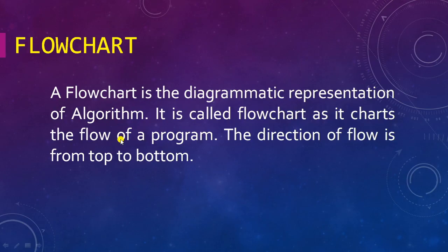A flowchart is the diagrammatic representation of the algorithm. Whatever we do in algorithm with the help of shapes, we depict that entire algorithm in a flowchart. That's why it's called a flowchart, because it charts the flow of a program. The direction of a flowchart is from top to bottom.